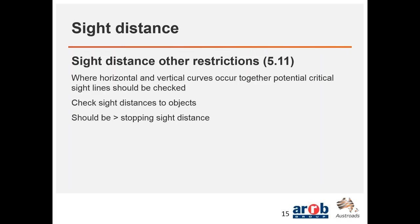There's some additional guidance on sight distance in other circumstances, particularly where horizontal and vertical curves combine. You pick two points on the road to check, apply your object heights and eye heights, and check whether the distance between them is visible. If not, you need to return to your design and improve that stopping sight distance — reinforcing the need to check these, particularly where there are combined horizontal and vertical curves.